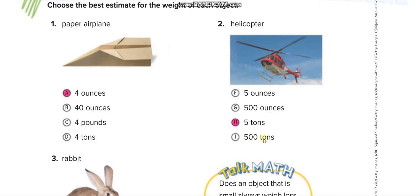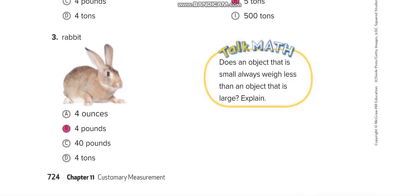500 tons would be too much—a helicopter is a big one, so you can say five tons. A rabbit: four pounds. Forty pounds would be too much; it's not like a buffalo, so four pounds.